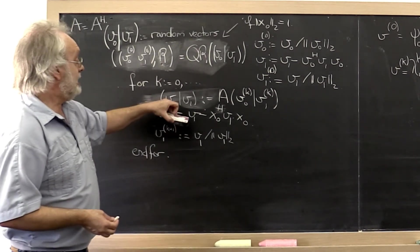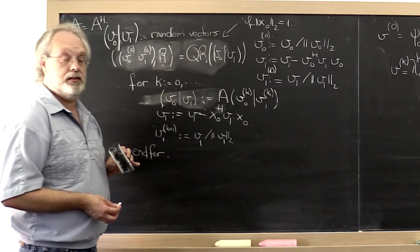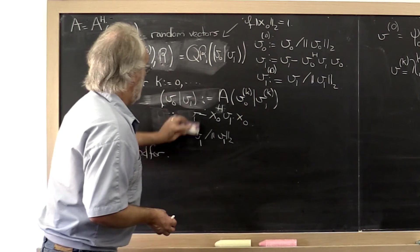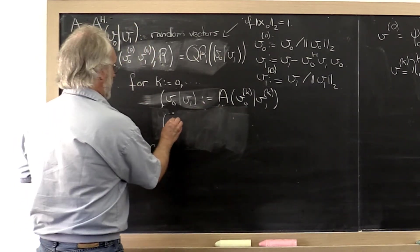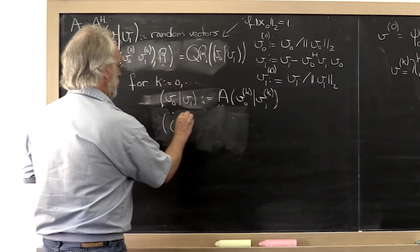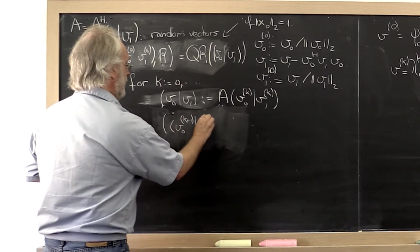And then we need to make these two vectors mutually orthonormal again. And we can do that by once again saying, let's create a matrix with columns v0, k plus 1, v1, k plus 1.